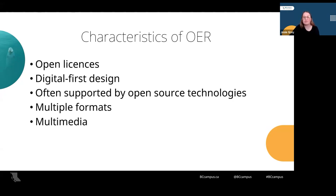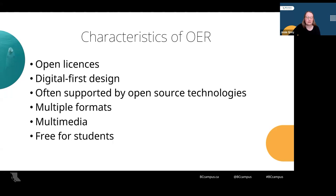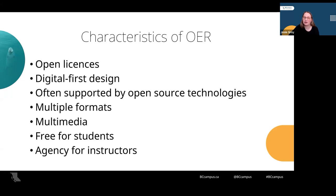Fifth is multimedia. OER published in Pressbooks are available as web books that support text and images, but also allow you to directly embed video, audio and animations for students to engage with. Sixth, because of the open licenses and digital formats, OER are free to students. And finally, the open licenses give instructors greater agency over their course materials, as they are able to customize OER, create their own OER, or remix multiple OER together.